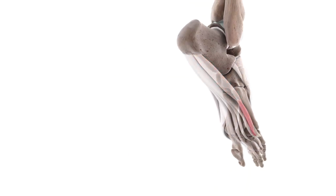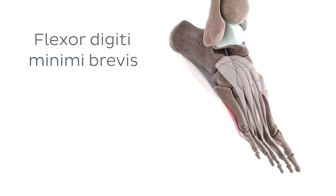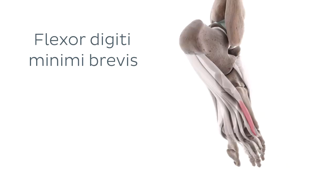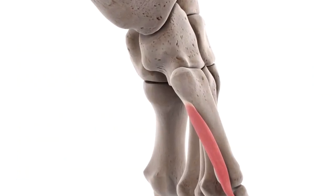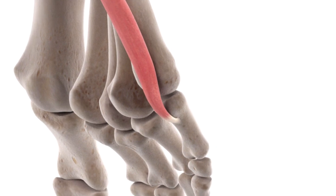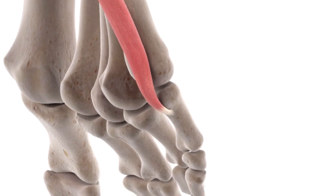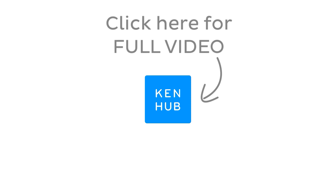Moving a little deeper into the plantar muscles, our second muscle of interest is the flexor digiti minimi brevis. This muscle is much smaller compared to the abductor digiti minimi and is located in the third layer of plantar muscles. It has its origin on the medial plantar surface of the base of the fifth metatarsal bone, and may also have an attachment to the long plantar ligament. Its short muscular belly continues distally to insert also at the base of the proximal phalanx of the fifth digit.